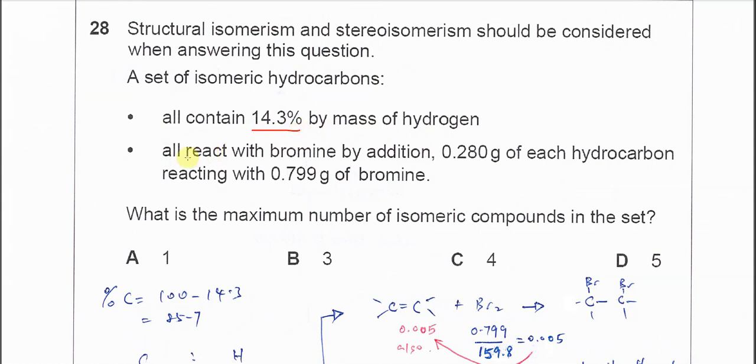All hydrocarbons react with bromine by addition, with 0.28 grams of each hydrocarbon reacting with 0.799 grams of bromine.